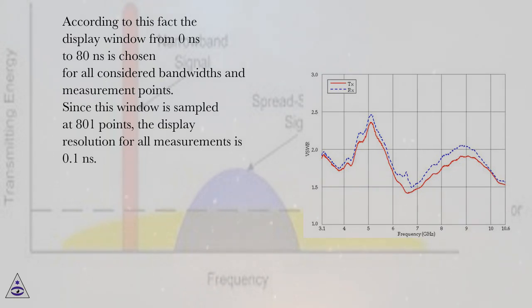According to this fact, the display window from 0 ns to 80 ns is chosen for all considered bandwidths and measurement points. Since this window is sampled at 801 points, the display resolution for all measurements is 0.1 ns.